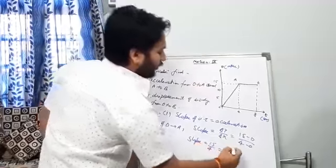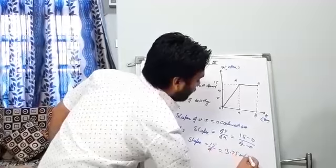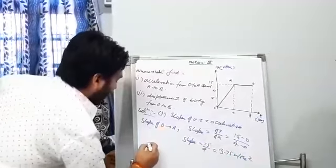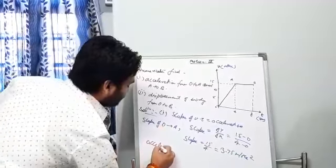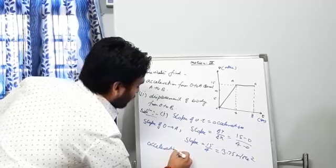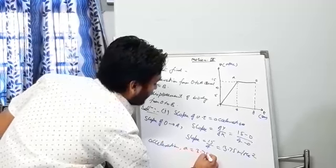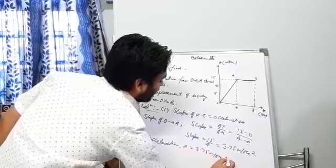4, 3 is 12, 6, 0, 7, 5 meter per second square. That means acceleration equals to 3.75 meter per second square.